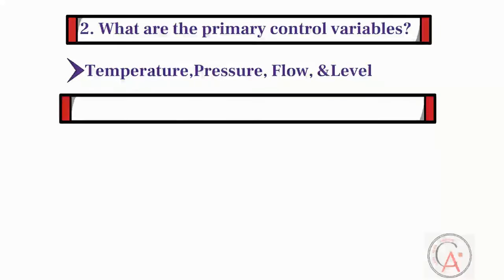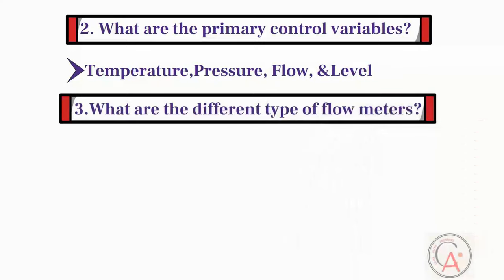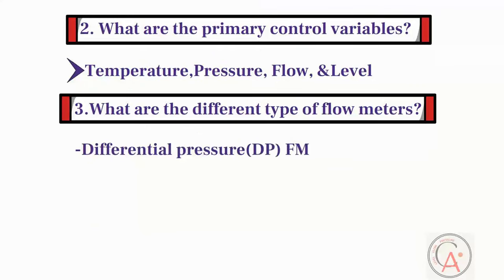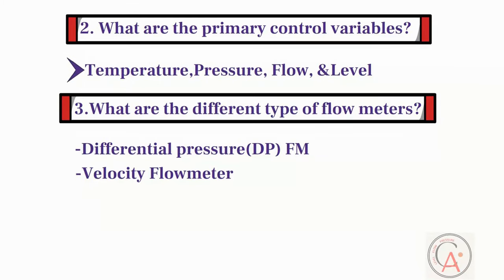The third question is: what are the different types of flow meters? Based on the working principle, there are five types of flow meters. The first is differential pressure or DP flow meter, second is velocity flow meter, third is positive displacement flow meter, and fourth is mass flow meter.